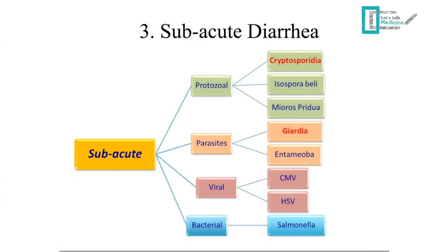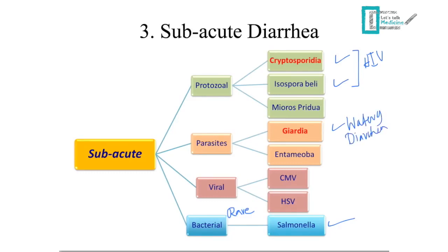Moving on to subacute diarrhea: it is mostly caused by organisms other than bacteria — bacterial causes are rare, with Salmonella being the main bacterial cause. The two most common causes are Cryptosporidium and Giardia. Cryptosporidium is a protozoan; Isospora belli and Cryptosporidium are found in HIV patients. Giardia causes watery diarrhea lasting longer than usual. Since other causes of watery diarrhea last only one to three days, watery diarrhea lasting more than that should prompt consideration of Giardia.